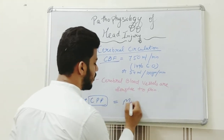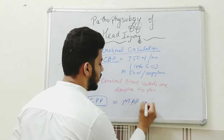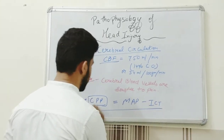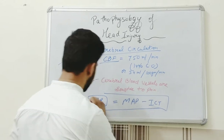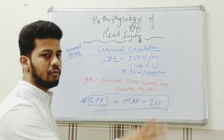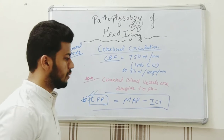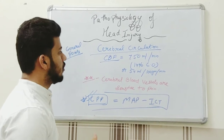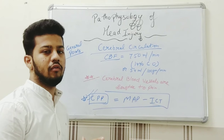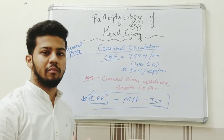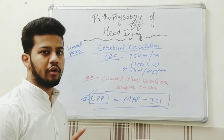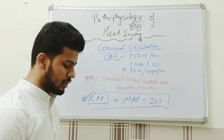Cerebral perfusion pressure is defined as mean arterial pressure minus intracranial pressure. This is the most important factor for blood flow to the brain. There are three main factors responsible for the regulation of cerebral blood flow, which we will now learn about.